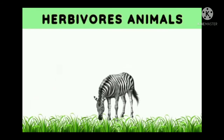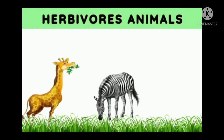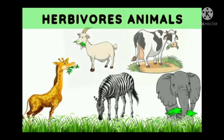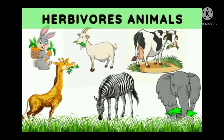Zebra, Giraffe, Elephant, Goat, Cow and Rabbit are few examples of Herbivore animals.